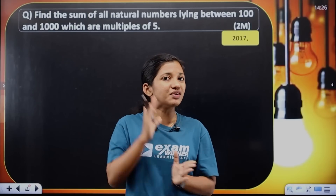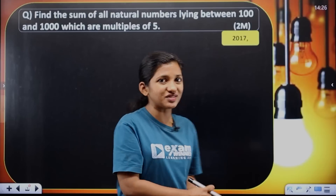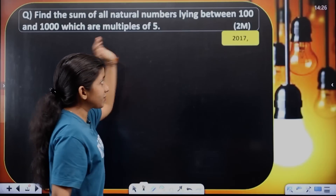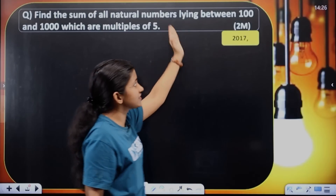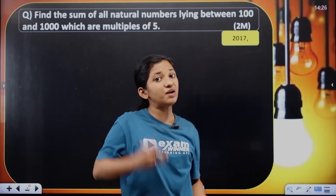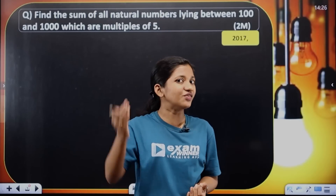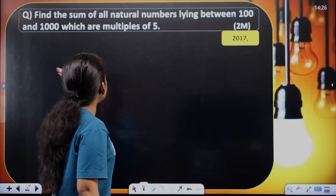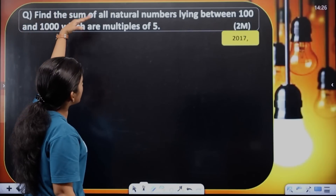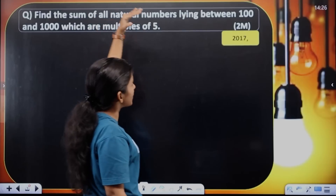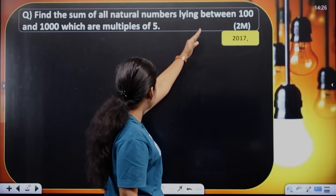Then we will solve the first problem. This problem is 2 marks in 2017. We will find the sum of all natural numbers that are multiples of a given value.